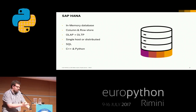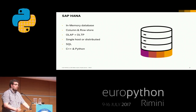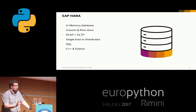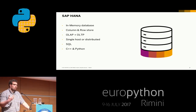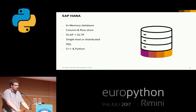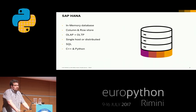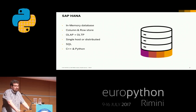SAP HANA is an in-memory database, which means you need a lot of memory, but you can start from the beginning. We have, for example, one small express edition. You can start with it on your local notebook — you just need 16 gigabytes of memory. But you can also scale out and have a system with something like 48 terabytes of memory, and there are real customers running such systems, and it's still very impressive.